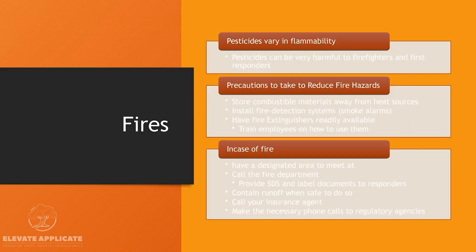Regarding fires — pesticides can vary in flammability and can be very harmful to firefighters and first responders, which is why that inventory and having SDS sheets and labels is so important. Precautions to reduce fire hazards include storing combustible materials away from heat sources, installing fire detection systems and smoke alarms at bare minimum, and having fire extinguishers readily available with trained employees. Know what type of extinguishers you have, since some are rated for certain products — oil-based versus water-based. Have a designated meeting area in case of a fire, just like fire drills in school.